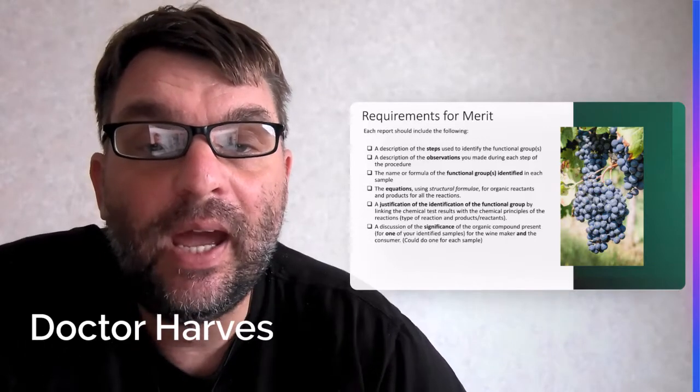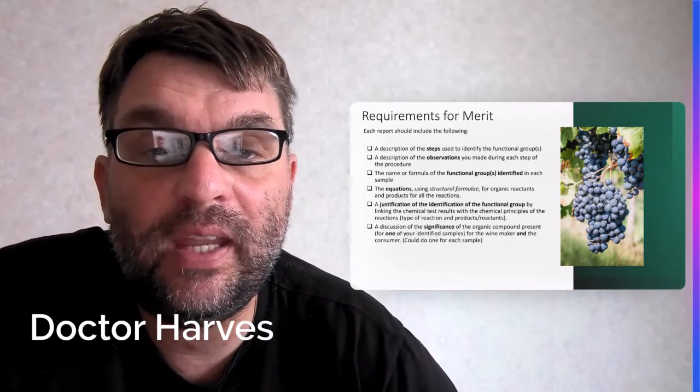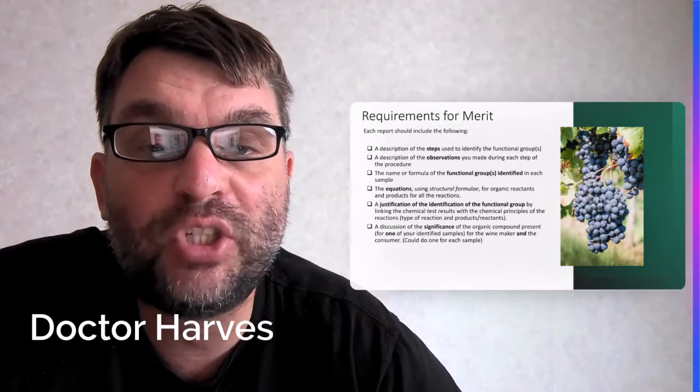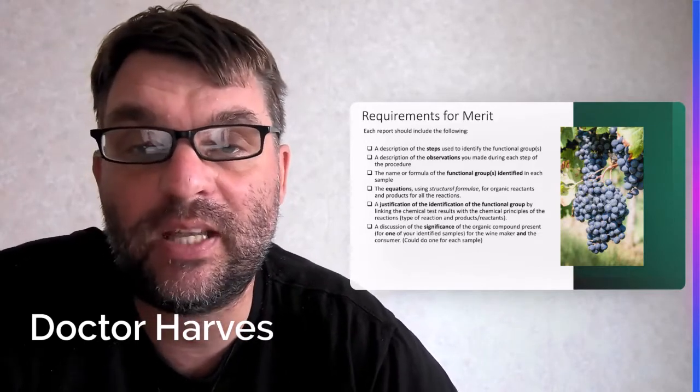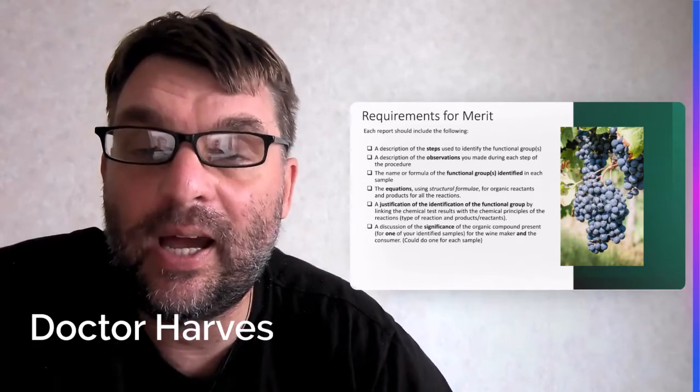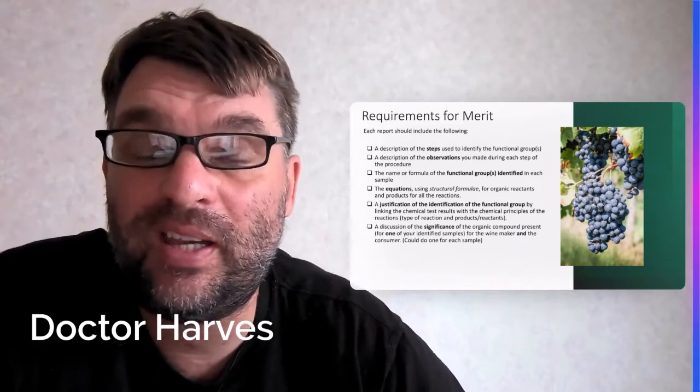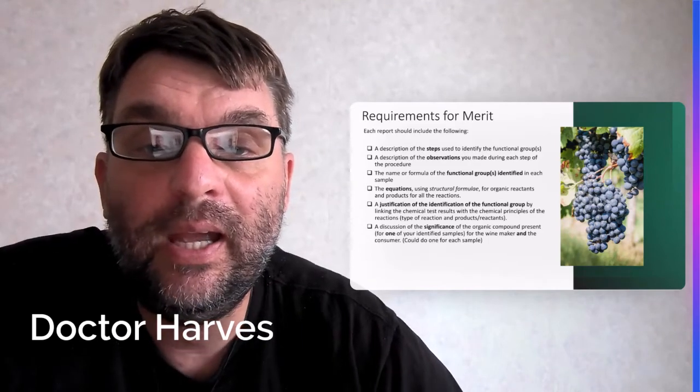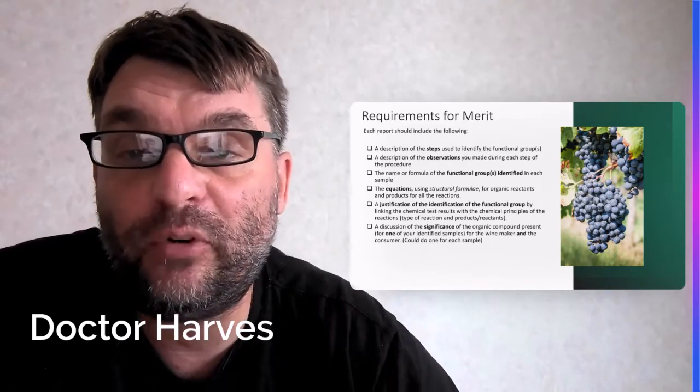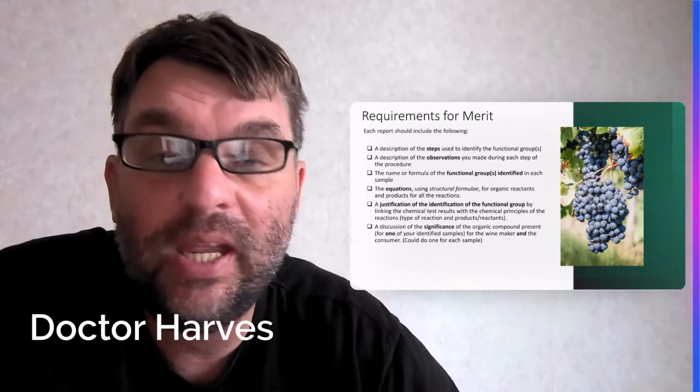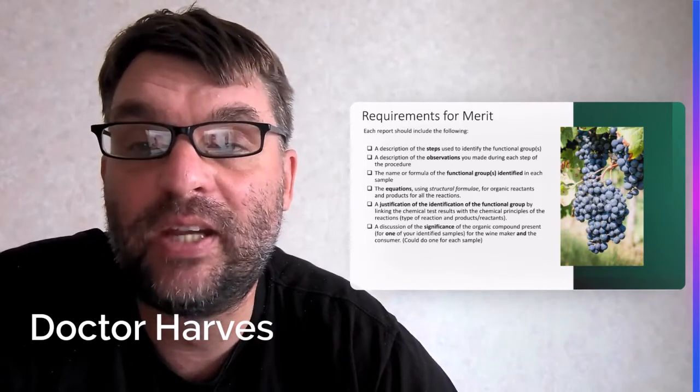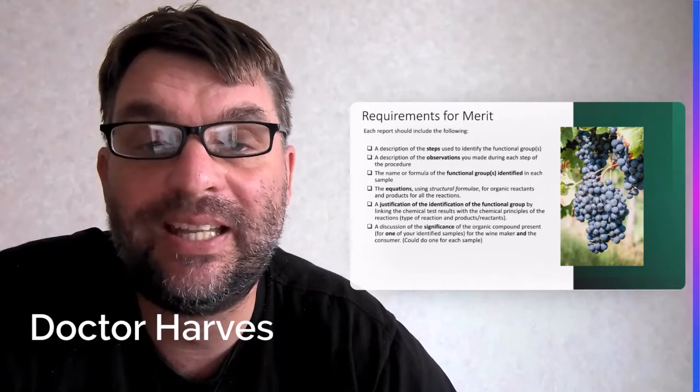And then identification of the functional groups is justified by linking the chemical test results, but also the types of reactions and products and reactants that are formed. So again, for carboxylic acid reacting with sodium carbonate, for example, what products are formed, the salt, for example, and carbon dioxide gas, and what kind of reaction this is. This is an acid-base reaction. So it's carbonate reacting with a carboxylic acid.